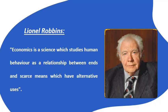In simple words, Professor Robbins focused on the fulfillment of unlimited human wants through the use of limited resources. He focused on using resources in a sustainable manner so that they are available for future generations as well. According to him, economics means that human wants should be fulfilled such that limited resources are utilized optimally and remain available for generations to come.